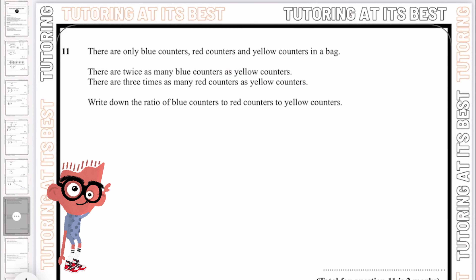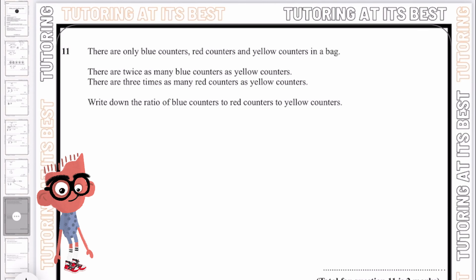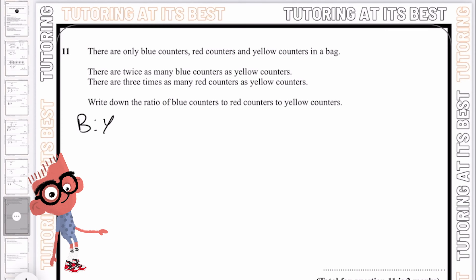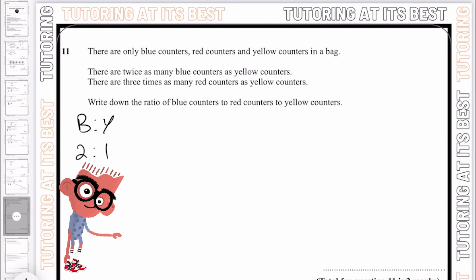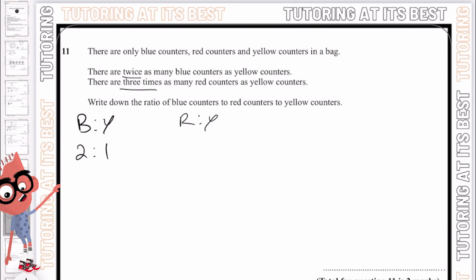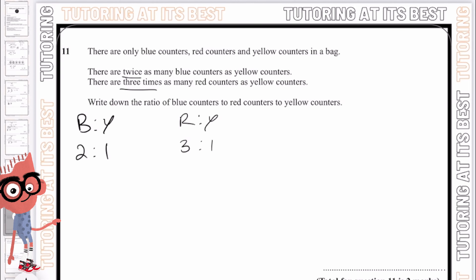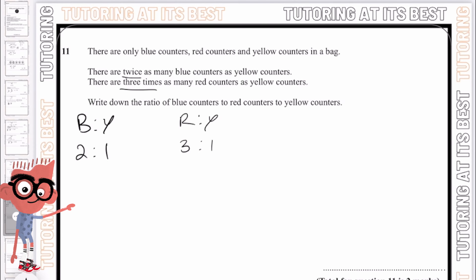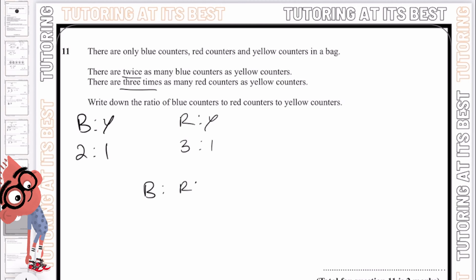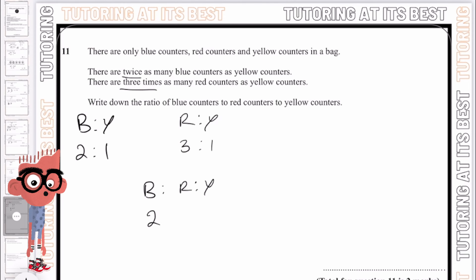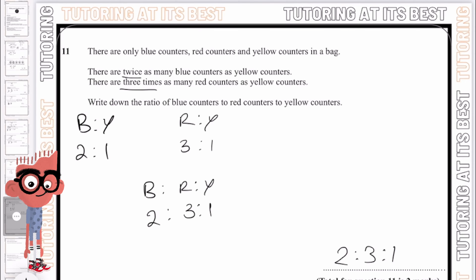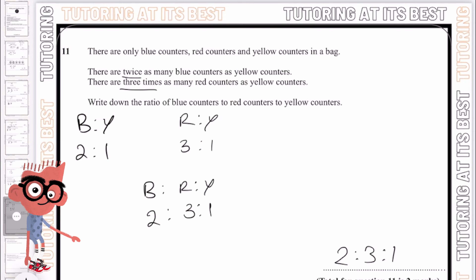Question number 11. There are only blue counters, red counters, and yellow counters in a bag. There are twice as many blue counters as yellow counters, so blue to yellow is 2 to 1. There are three times as many red counters as yellow counters, so red to yellow is 3 to 1. Now writing the ratio of blue to red to yellow: blue is 2, red is 3, and yellow is 1 — giving us 2 to 3 to 1. The best approach is always to write out what the sentence is saying, then combine them for a more accurate answer.